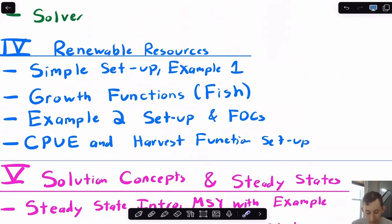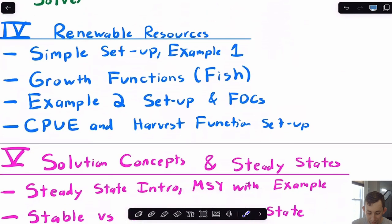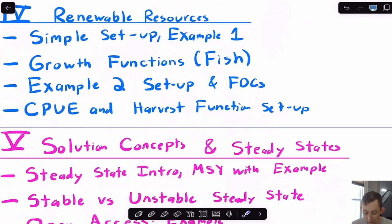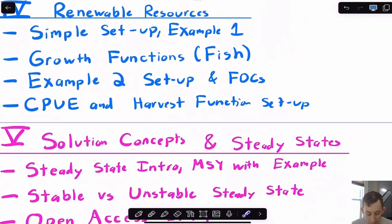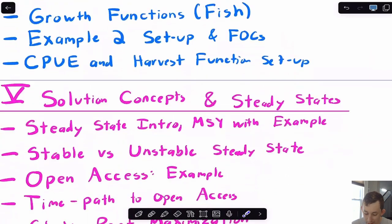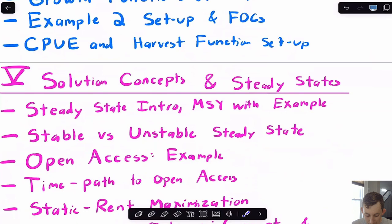Then we're going to take a quick detour and talk about growth functions because in most, or at least in my environmental and natural resource class, we talked about fishing. So we need to talk about some growth functions related to fishing. Then we'll do an example. Then we'll talk about constant per unit effort and harvest functions. Again, that's related to fishing. And we'll use Solver as well.